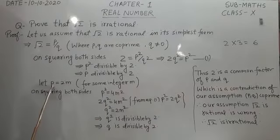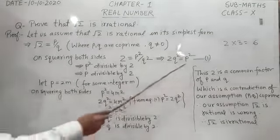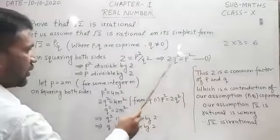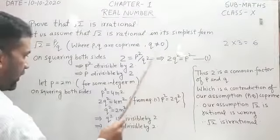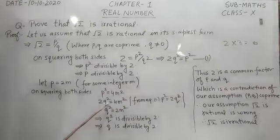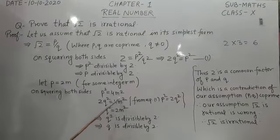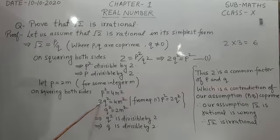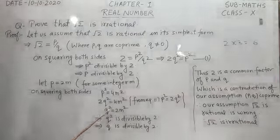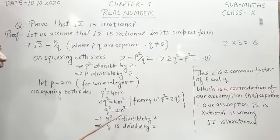Again on squaring both sides we get p square is equal to 4m square. But from equation 1, p square is equal to 2q square, so we put p square equal to 2q square. It becomes 2q square is equal to 4m square. The 2 cancels and we get q square is equal to 2m square.